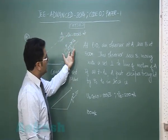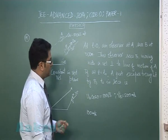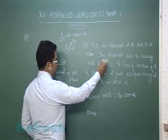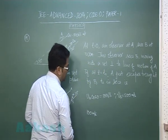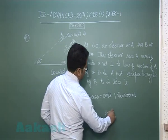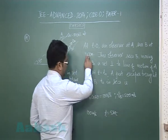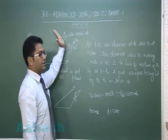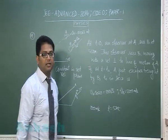That's a relative velocity and the distance is 500 meter and it just escapes being hit. That means the time t has to be 5 seconds because that's the distance, that's the relative velocity in this line and the time would be 5 seconds.